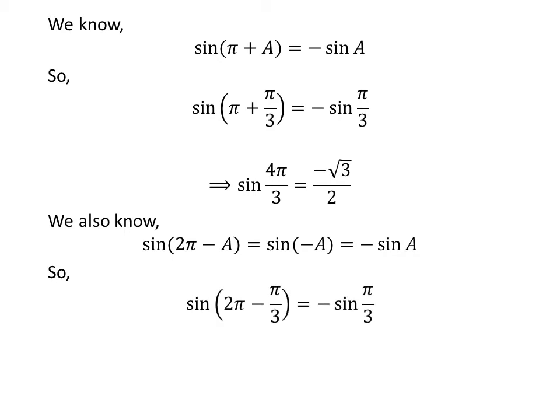Application of the above identity implies that sine of 2 times pi minus pi upon 3 is equal to minus sine of pi upon 3. As 2 times pi minus pi upon 3 is equal to 5 times pi upon 3, so sine of 5 times pi upon 3 is equal to minus square root of 3 upon 2.